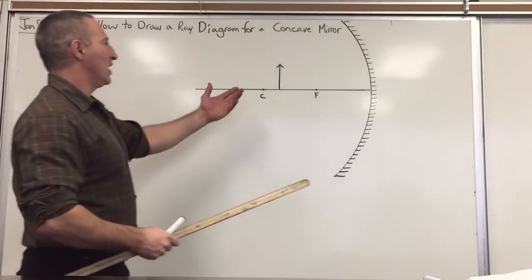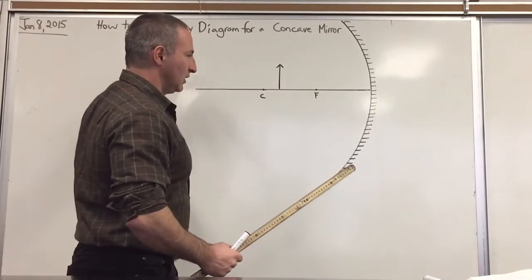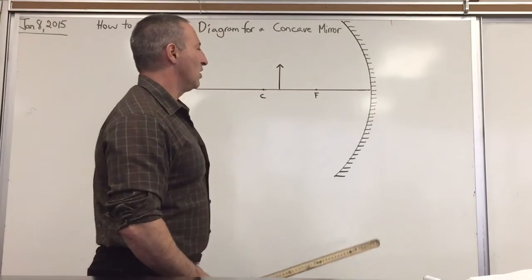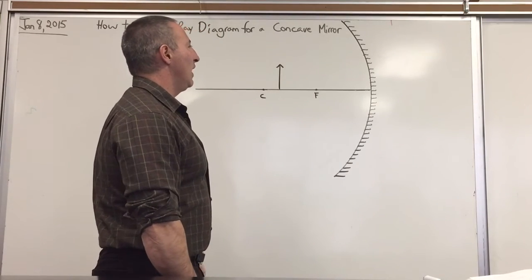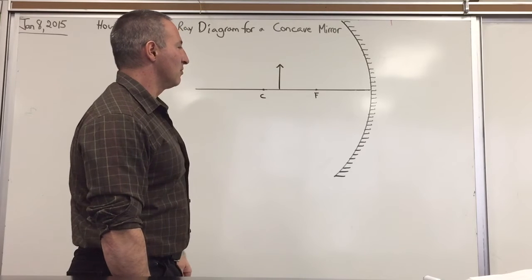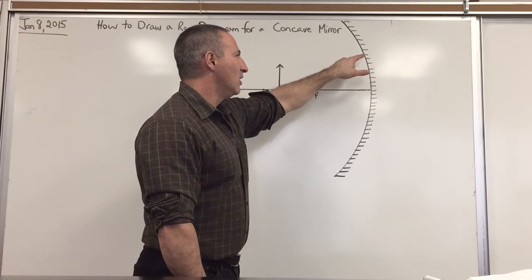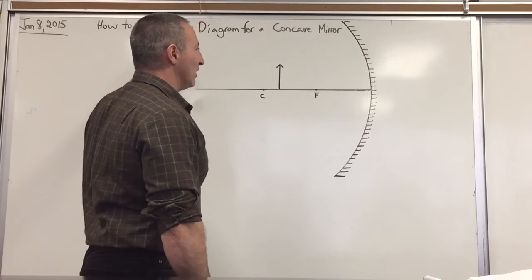You can have the object at infinity, meaning any distance in which the rays come in parallel, in which case all the rays will focus onto the focus. And that's the technique they use for making flashlights. They'll put the light bulb at the focus because when the rays reflect onto the mirror, they come out parallel and form a nice beam.